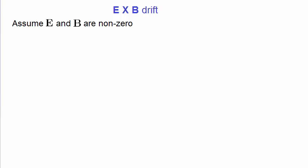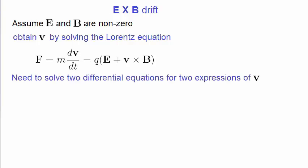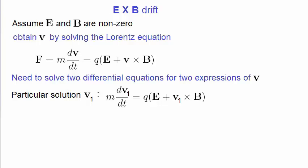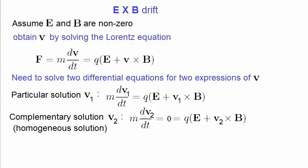Nevertheless, we still need to solve the Lorentz equation for the velocity v. This is a first order linear differential equation. In all linear differential equations, one really has to solve two differential equations. The first is known as the particular solution, whereby we substitute in the particular vectors for the electric and magnetic fields and then solve for v, as we did last lecture. The second differential equation is known as the complementary solution, or the homogeneous solution. This is where the right hand side is equated to zero.